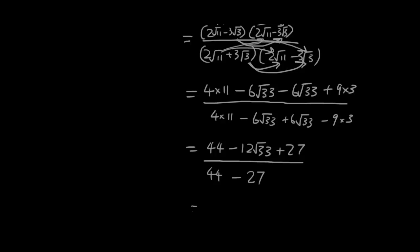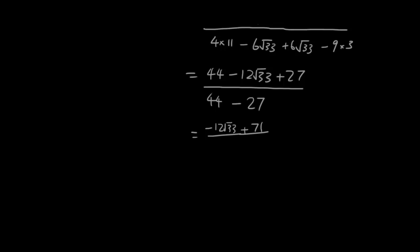So then the answer is 44 minus 12 square root of 33 plus 27 over 44 minus 27. And the bottom part can be simplified, the top part is simplified into negative 12 square root of 33 plus 60, no, 71, because 44 plus 27, 71 hopefully, and the bottom is 44 minus 27 is 17.